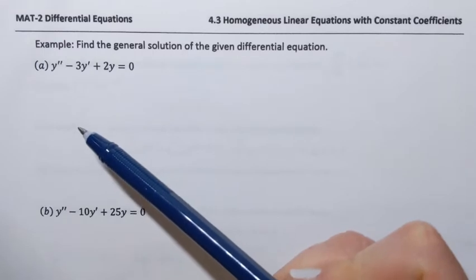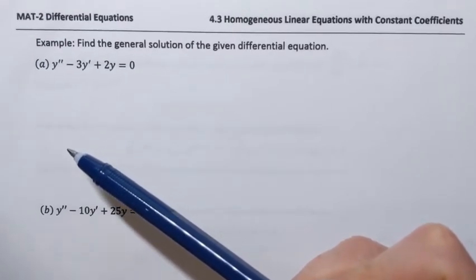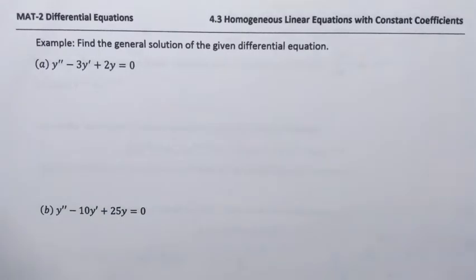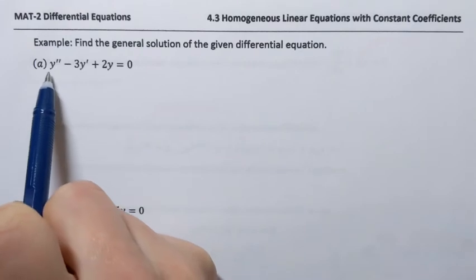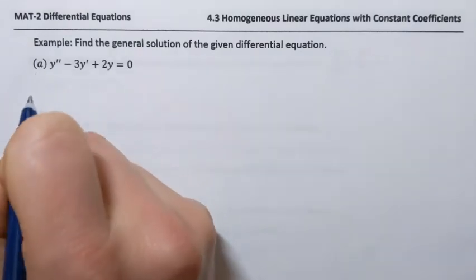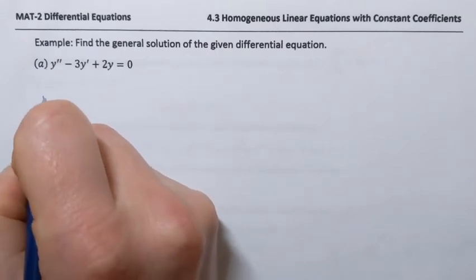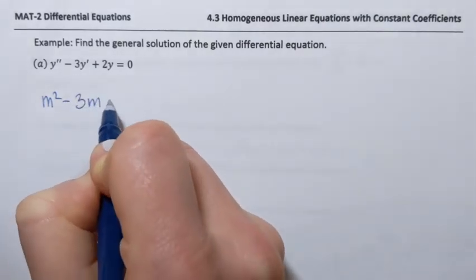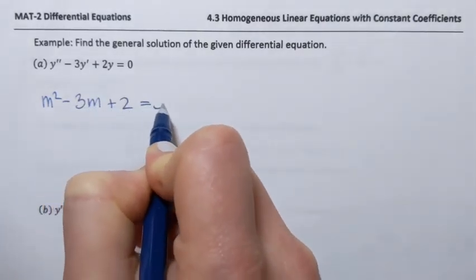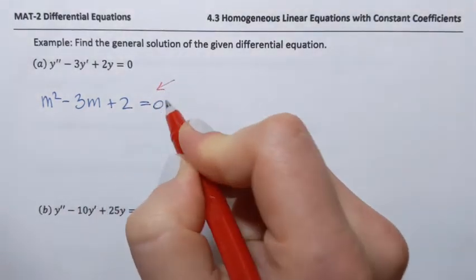To solve this equation, we need to obtain an auxiliary equation. That equation is a quadratic equation with the same numerical coefficients as our differential equation. So that means it's going to be m squared minus 3m plus 2 equals 0. That's the auxiliary equation.